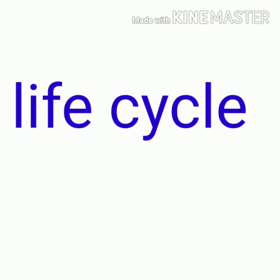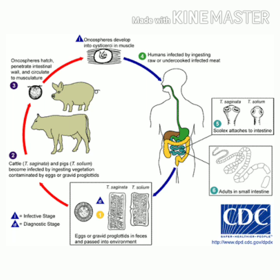Now let us discuss the life cycle of Taenia saginata and Taenia solium. It uses two hosts to complete its life cycle — the definitive host is human and the intermediate host is pig or cattle. The adult worm lives in the intestine of the human and is composed of many segments called proglottids. The gravid or mature proglottids detach from the body of the tapeworm and pass through the anus in stool. These gravid proglottids contain many eggs.